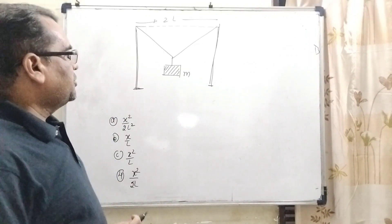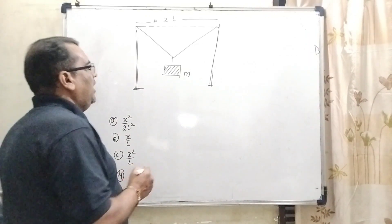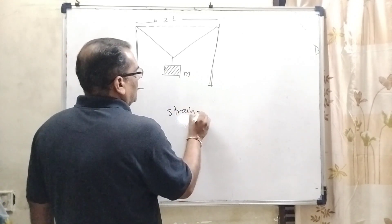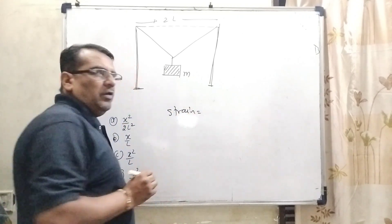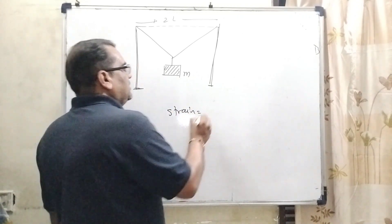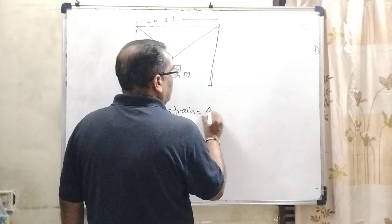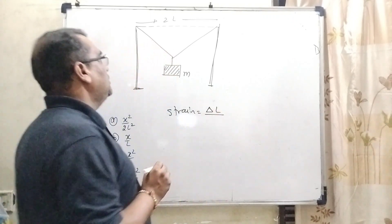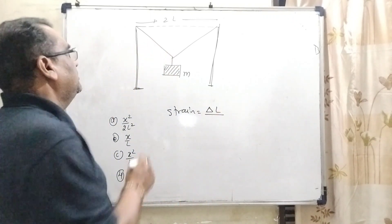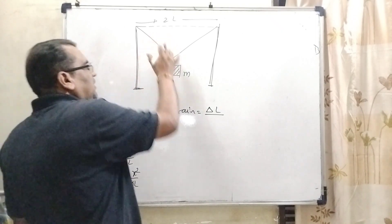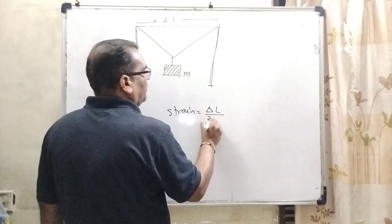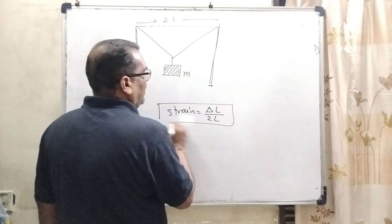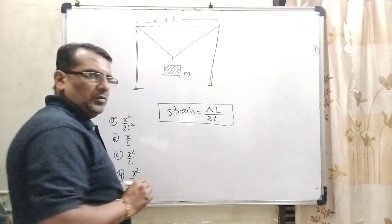In this question, we have to find the strain. What is the formula of strain? That is ΔL divided by original length. The original length given in the question is 2L. So we have to calculate ΔL.